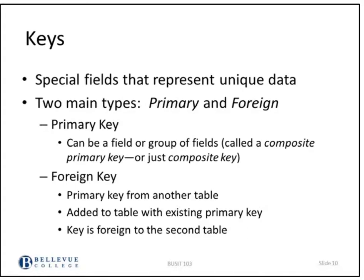Keys are special fields that represent unique data. There are two main types: primary and foreign. The primary key is typically a single field, but it could be a group of fields — in that case it is called a composite primary key, or simply a composite key. The foreign key is a primary key from another table that you add to the current table to establish a relationship between them.